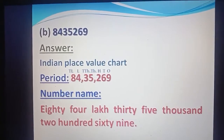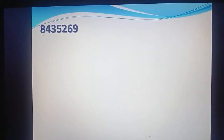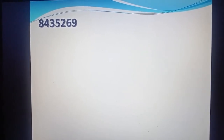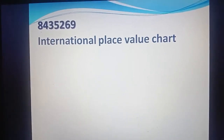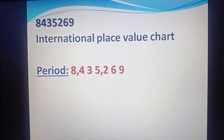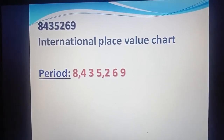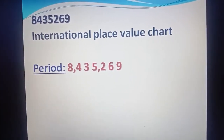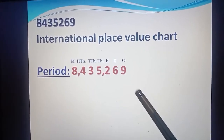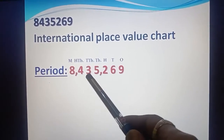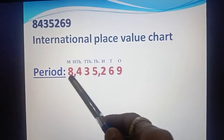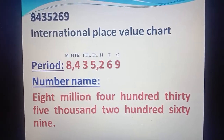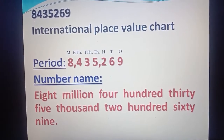Same part, that is 8435269. We write the number name using the international place value chart and divide according to its period: 8,435,269, and assign places — ones, tens, hundred, thousand, ten thousand, hundred thousand, and million. So its number name is eight million four hundred thirty-five thousand two hundred sixty-nine.